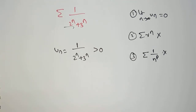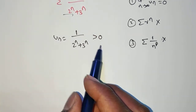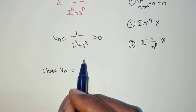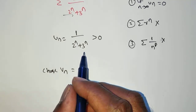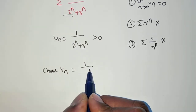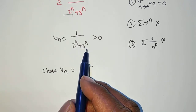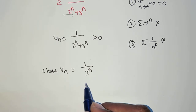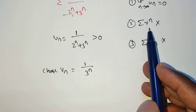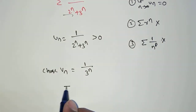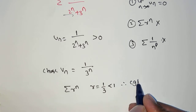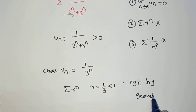So we go for the Limit Comparison Test. First, verify that uₙ is a series of positive terms — yes. Then choose vₙ. For vₙ, we look at the highest-power nth term in the numerator (which is n⁰ = 1) and the highest-power nth term in the denominator. The denominator has 2ⁿ and 3ⁿ; the highest is 3ⁿ. So vₙ = 1 / 3ⁿ. This is in the form summation r power n where r = 1/3, and since 1/3 < 1, summation vₙ is convergent by the geometric series test.